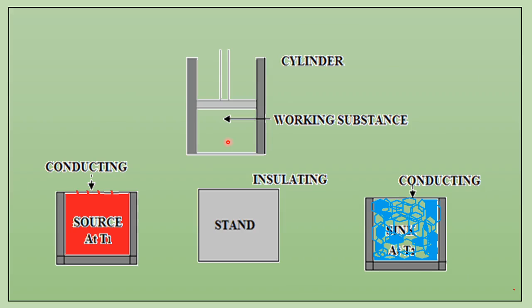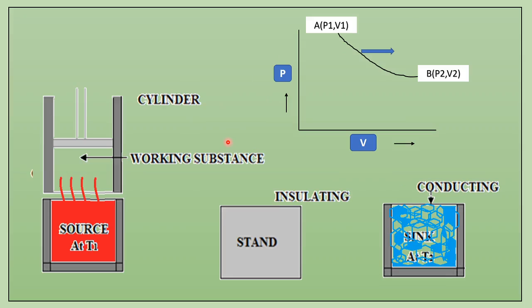A Carnot cycle has four different stages which we show graphically using a PV diagram. We will display this using the PV diagram here. Now let's see the first step.